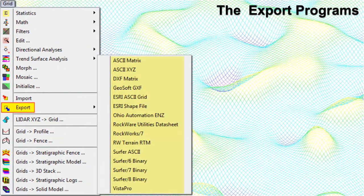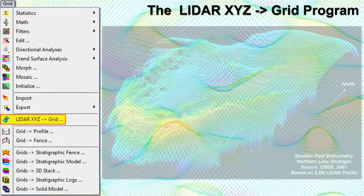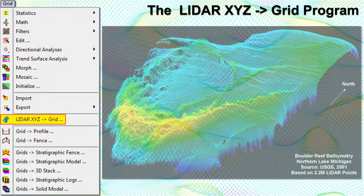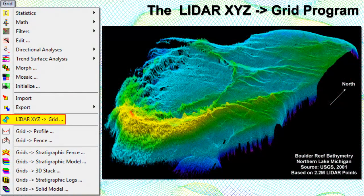The Export program converts RockWorks grid models into a variety of formats compatible with other products that analyze and/or display gridded data. The LiDAR XYZ to Grid program imports XYZ files created from LiDAR — or Light Detection and Ranging equipment — and generates a grid model representing Z values, typically surface elevation, by setting the node values equal to the LiDAR values within the corresponding cell. Because of the huge number of points in a typical LiDAR file, the program is file-based, meaning it does not load the points into memory.